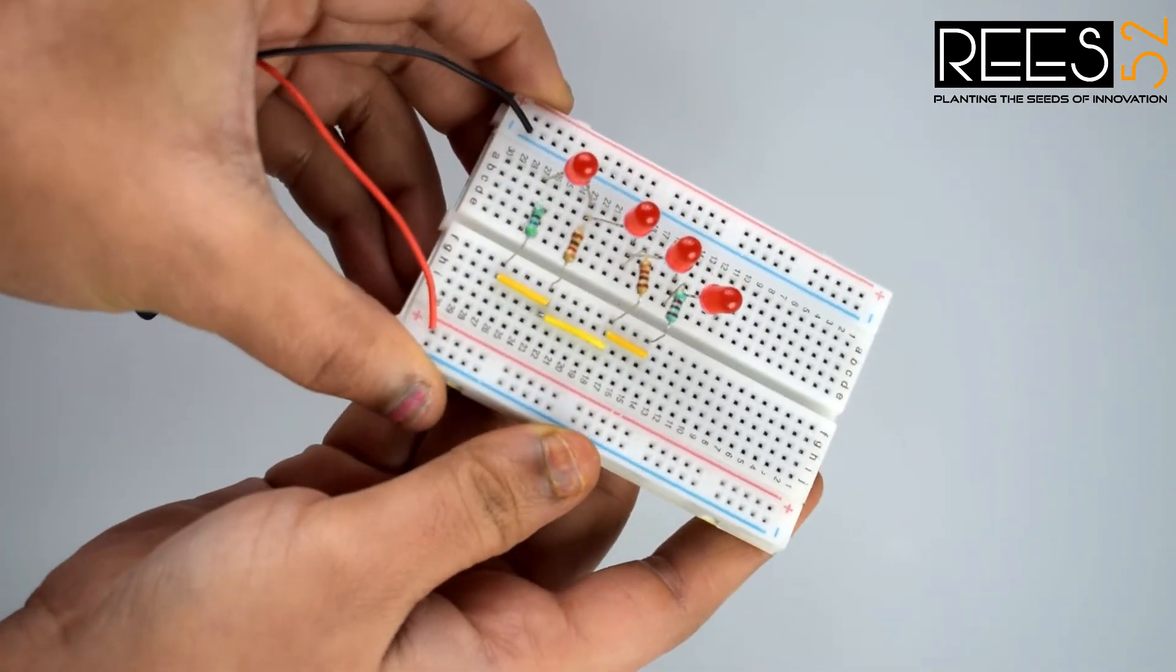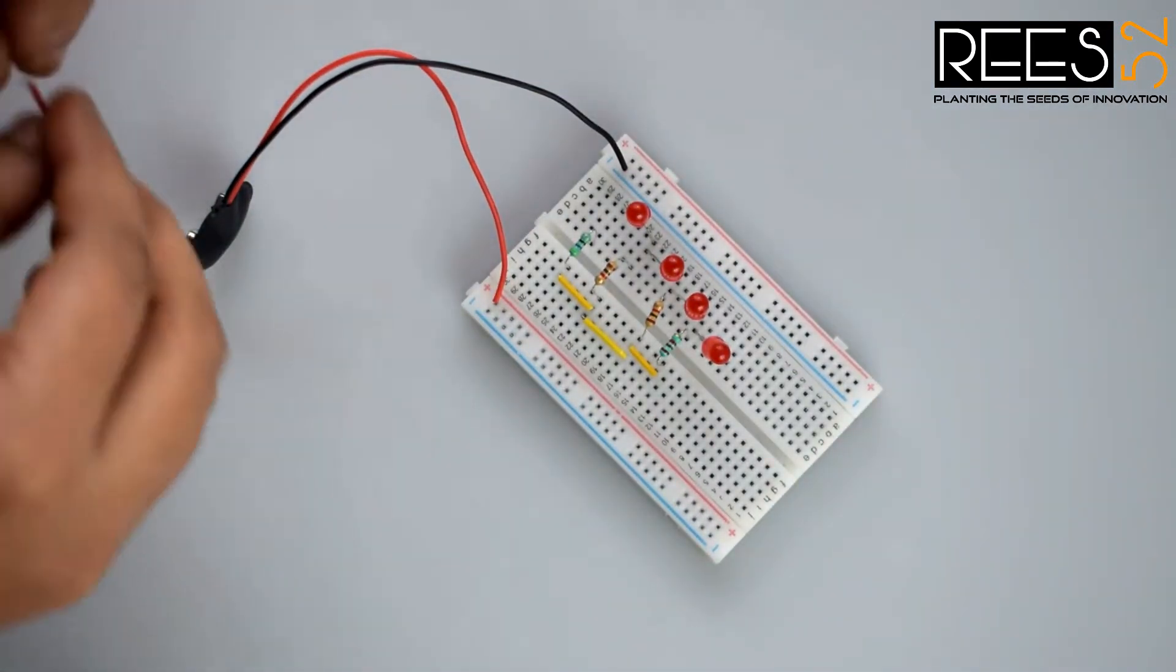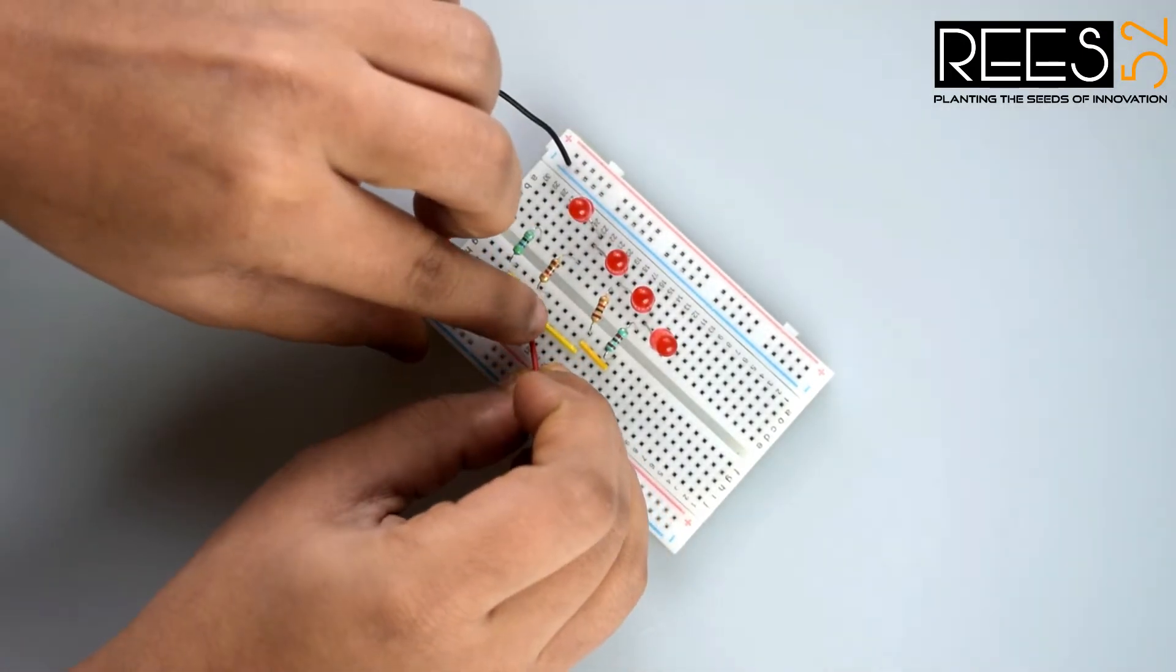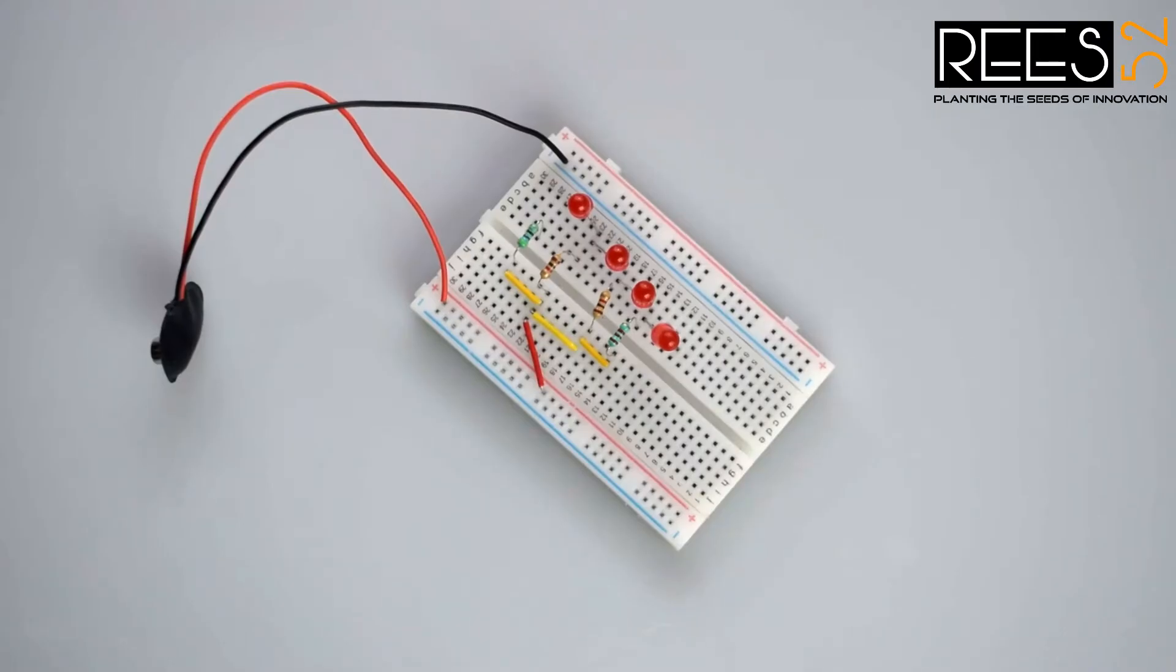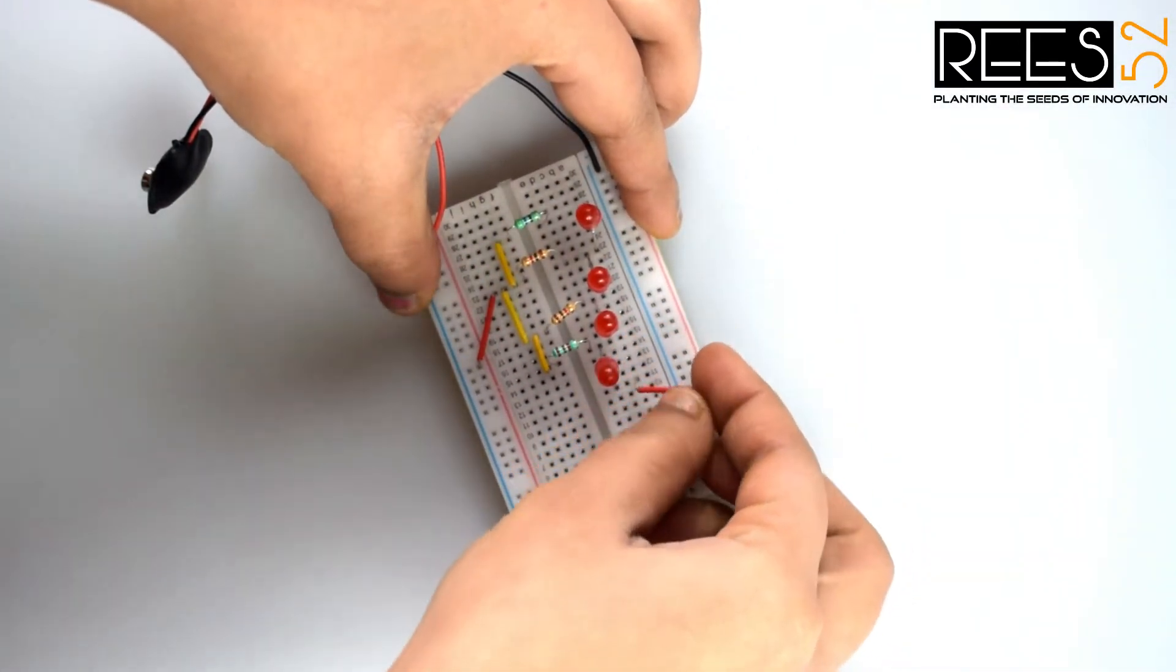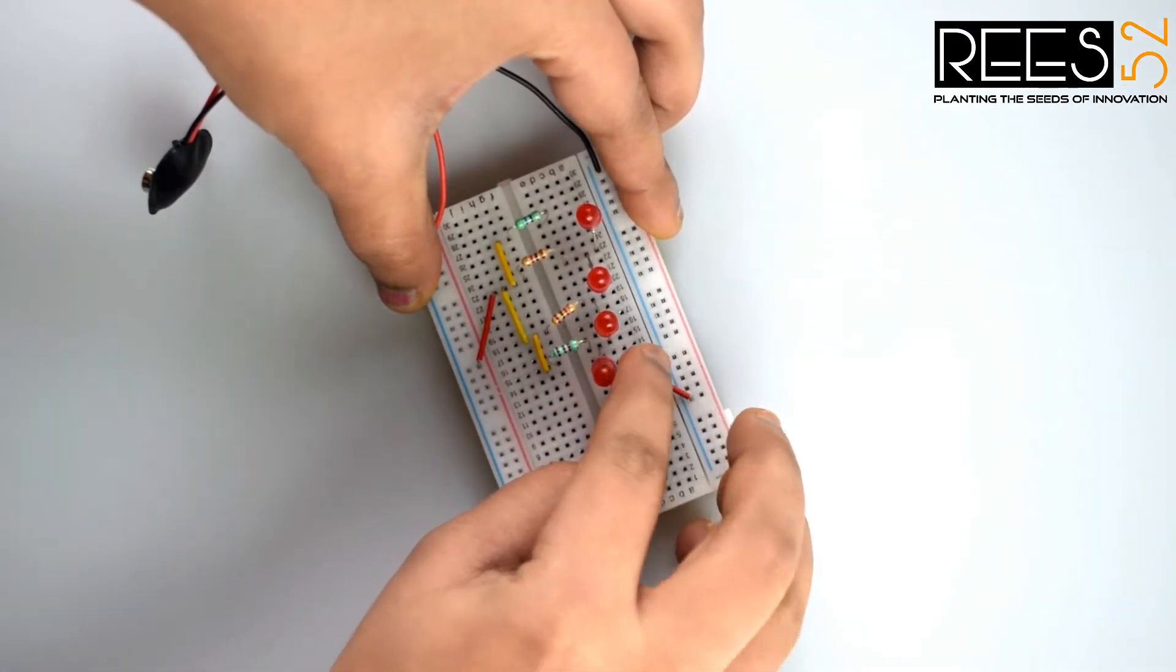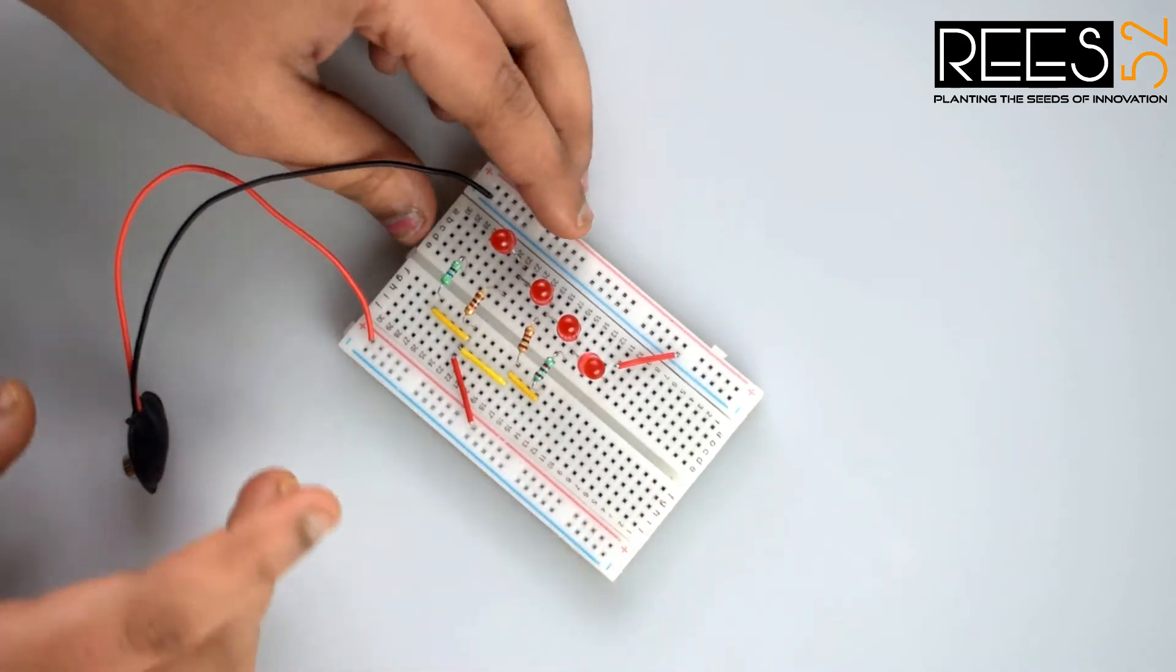You can see the connections. Now connect the positive terminal of battery to the 1kohm resistor and connect the fourth LED to the negative supply. Since we have not connected the battery yet, we will connect it later. You can see all the connections here are done.